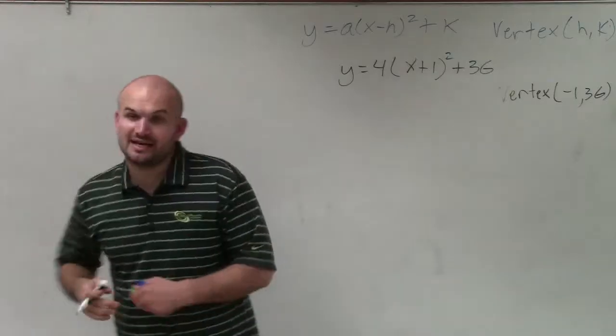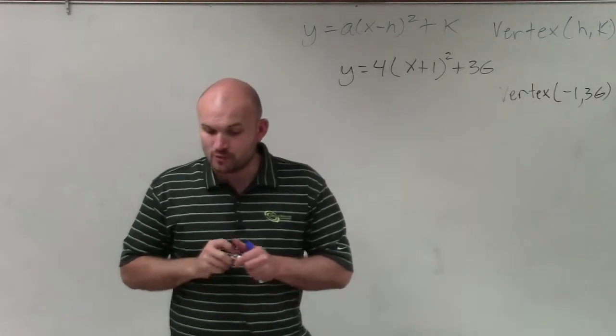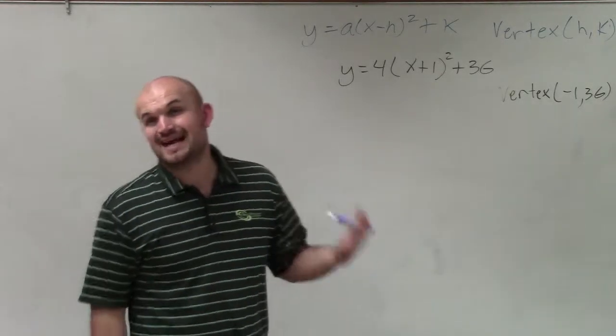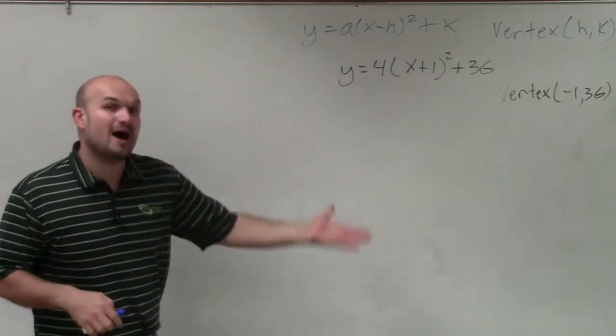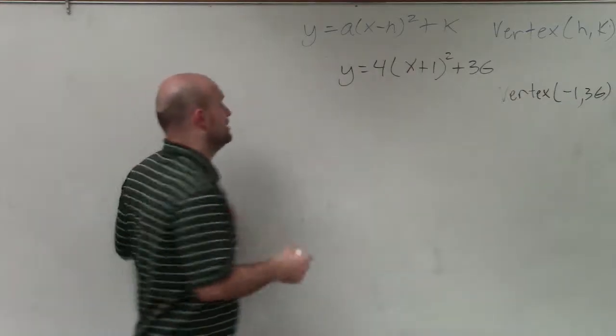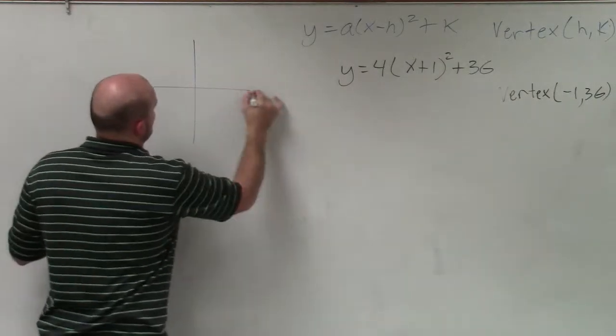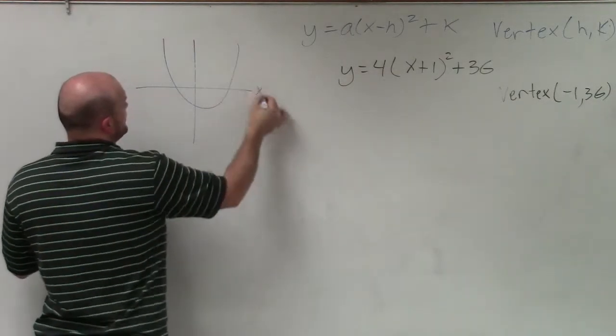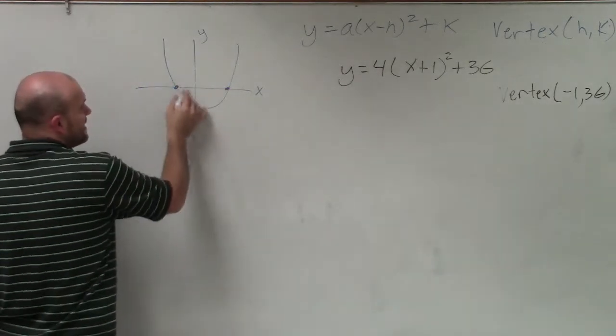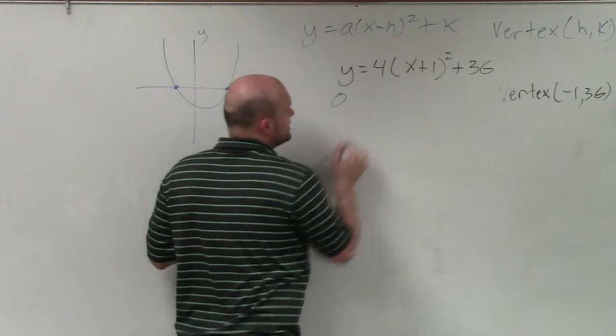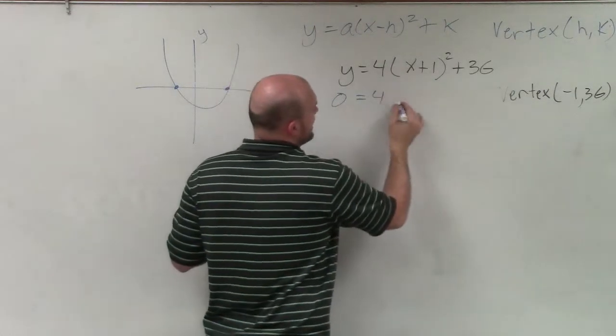Now the next thing I need to do is find the x-intercepts. So it's going to be where the graph is going to cross the x-axis. Therefore, where the graph crosses the x-axis, my y value or my output value is going to be equal to 0. If you think about it, let's say you have a quadratic here - here's your x, here's your y. Where this graph crosses, my y value is equal to 0. So I'm going to substitute in a 0 in for y and now solve.